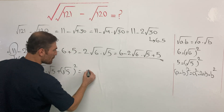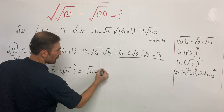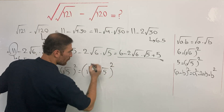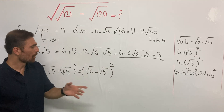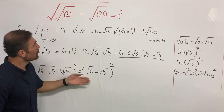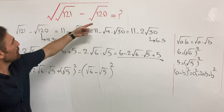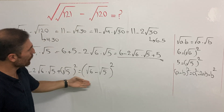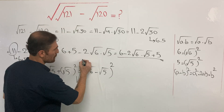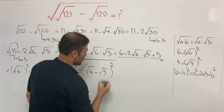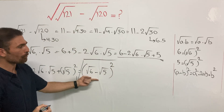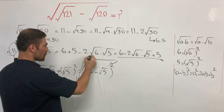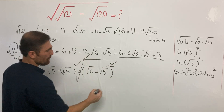Now I'm sure you all know what the next step is. This is second root of 6 minus second root of 5, to the power of 2. But this is only the inner part. We need to find the value of the second root of this inner part. These two as exponent and these two as root can be cancelled off.